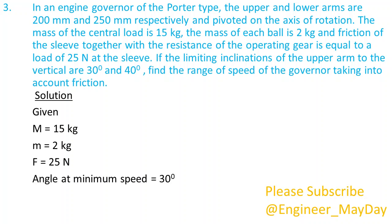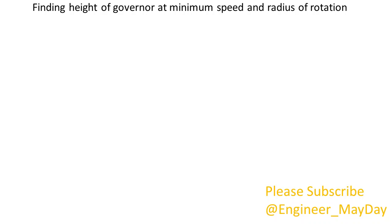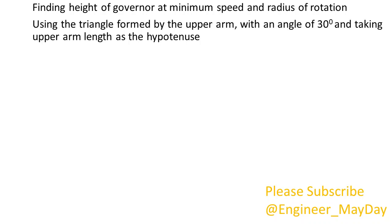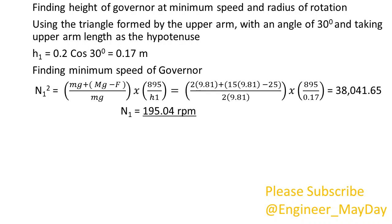Solution. Angle at minimum speed equals 30 degrees. Angle at maximum speed equals 40 degrees. Upper arm length equals 0.2 meters. Finding height of governor at minimum speed and radius of rotation: using the triangle formed by the upper arm with an angle of 30 degrees and taking upper arm length as the hypotenuse, H1 equals 0.17 meters. N1 equals 195.04 RPM.